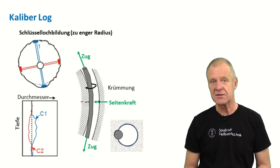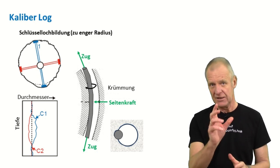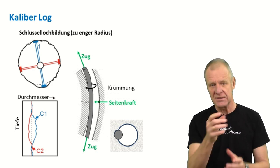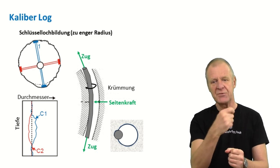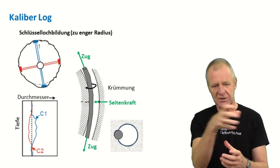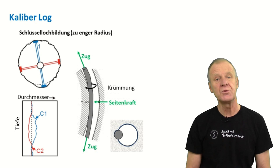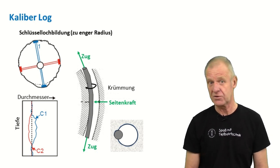Or sometimes you can see a key seat has formed. This happens when the rotating drill string in a curved section is rubbing against the inner wall of the borehole, and finally works its way into the side of the wall. A key seat also results in a very typical measuring curve in the caliper log, as you see here.